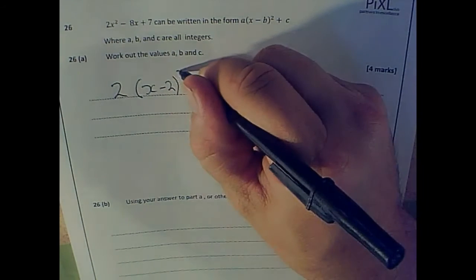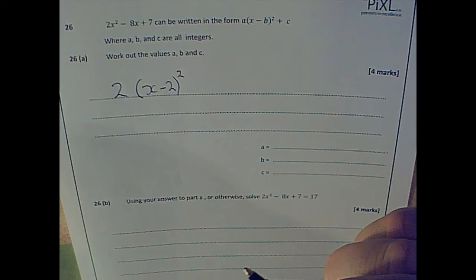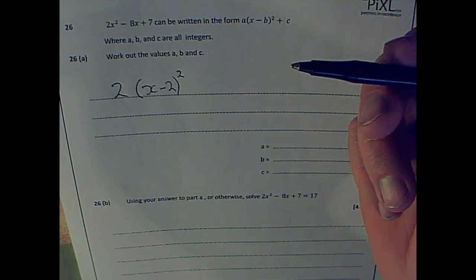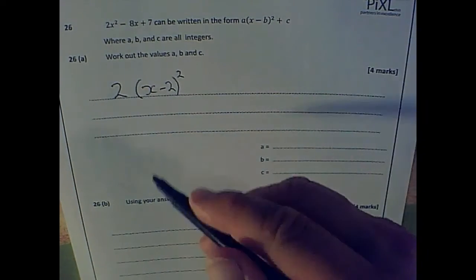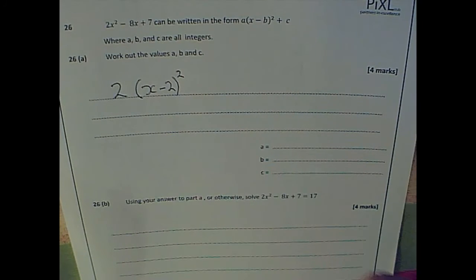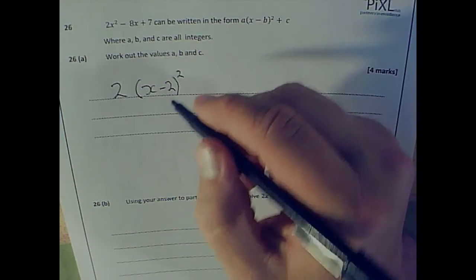So x minus 2 squared, and then it's plus something. I'm not sure what that is yet. So firstly, I'm going to work out what this 2x minus 2 squared would be.